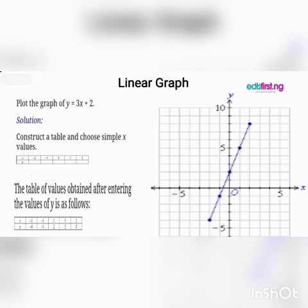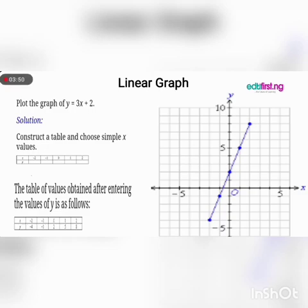When x is −2, you get the value of y. When x is −1, you get the value of y. When x is 0, you get the value of y. When x is 1, you get the value of y. When x is 2, you get the value of y. After substitution, you will have: y = −4 when x = −2; y = −1 when x = −1; y = 2 when x = 0; y = 5 when x = 1; y = 8 when x = 2.